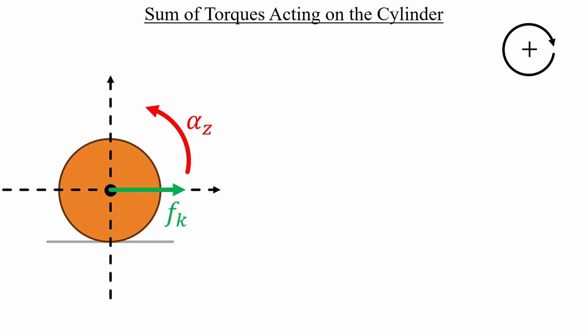The kinetic friction, however, does not act through the center. It's acting at the spot where the cylinder and the surface interact, at a perpendicular distance equal to the radius of the cylinder. So now we're ready for the sum of torque's equation.